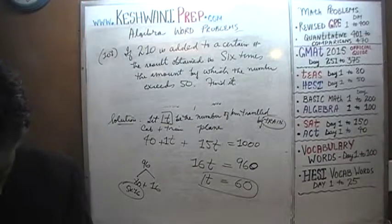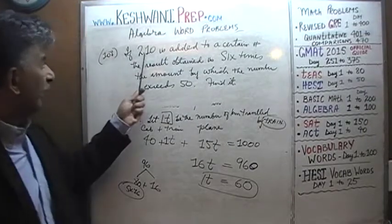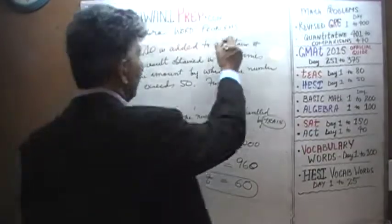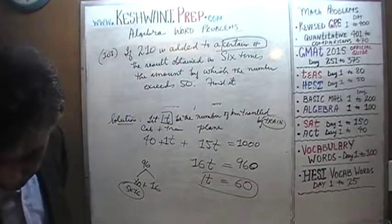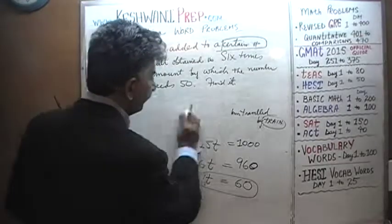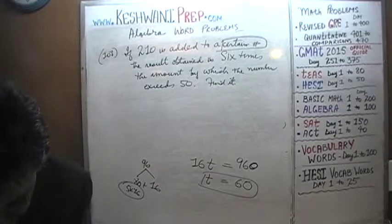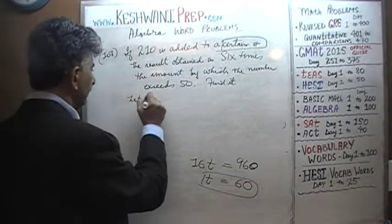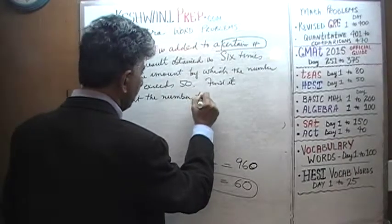Let's read the question one more time. It says that if we were to add 210 to a certain number — that certain number is unknown, so that's how we're going to define our variable. We're just going to stick with tradition and call it x. Let the number be x.